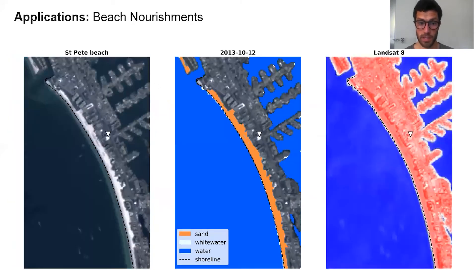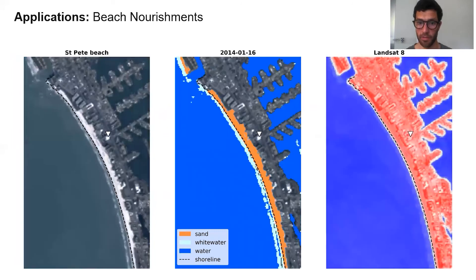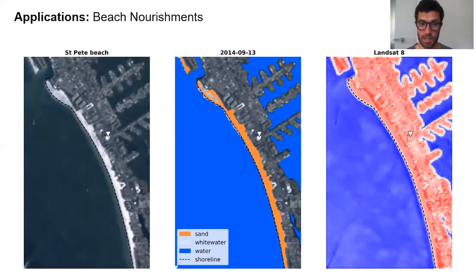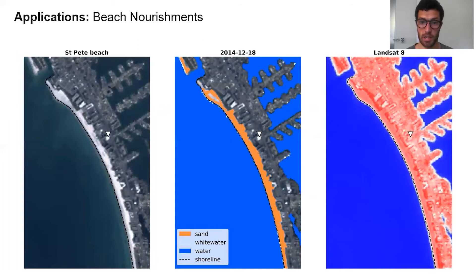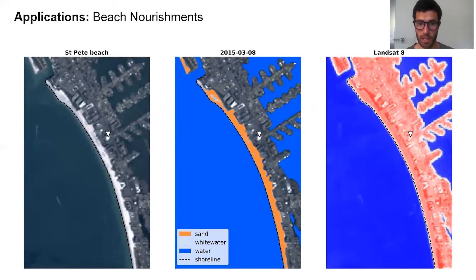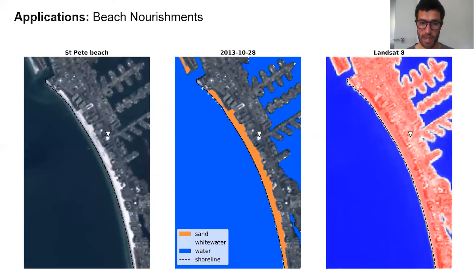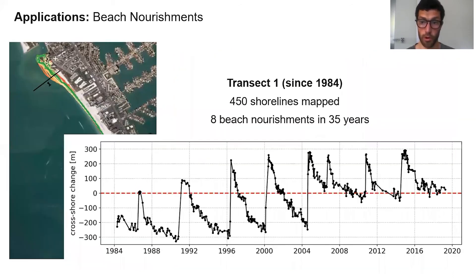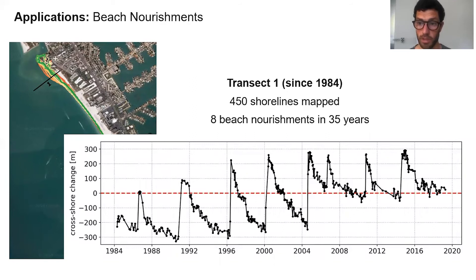Another interesting application is beach nourishments and how they perform over time. This is St. Pete Beach in Florida in the Gulf of Mexico — as you can see, it's heavily nourished. We put a transect through the northern end of the beach where the nourishment happens and look at the time series of shoreline change over the last 30 years. We can see about eight nourishment programs and how long it takes for the beach to return to the pre-nourished state, as well as the long-term trend including the nourishments at this site.